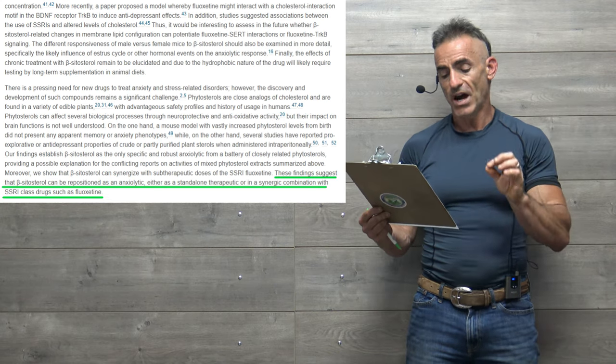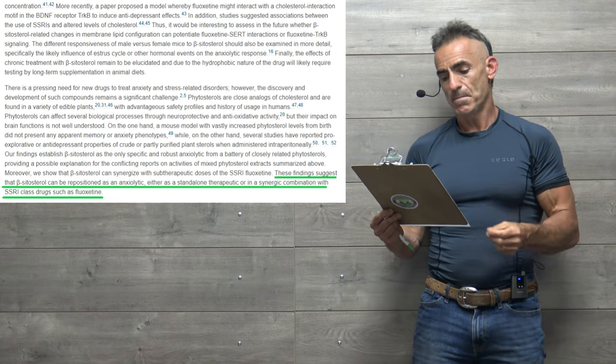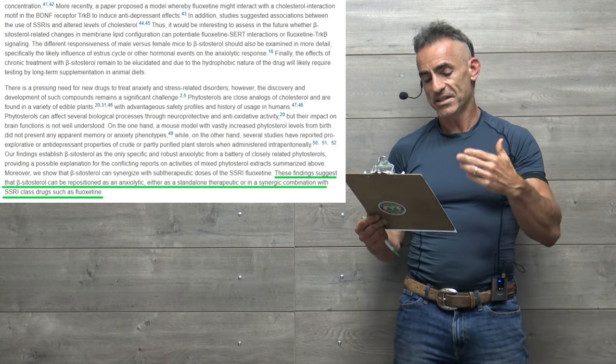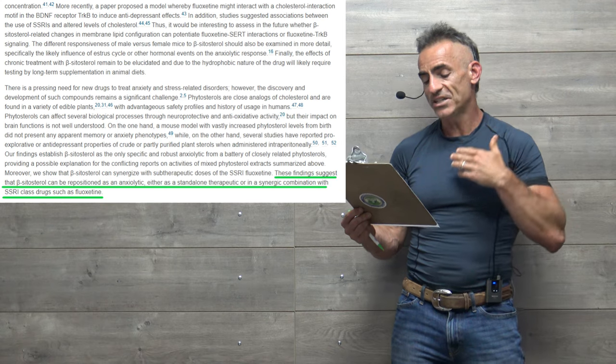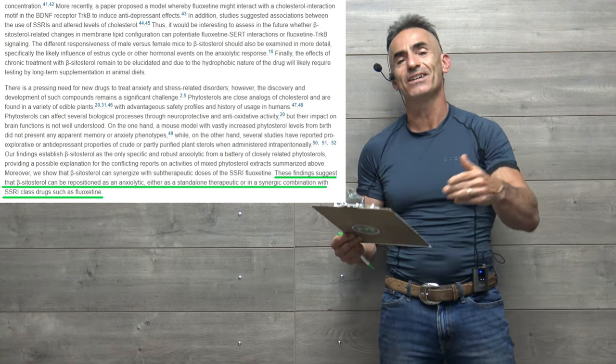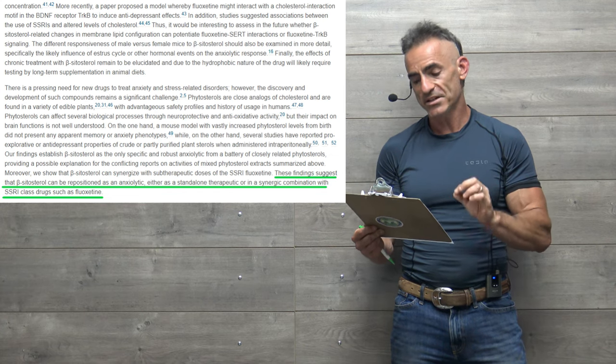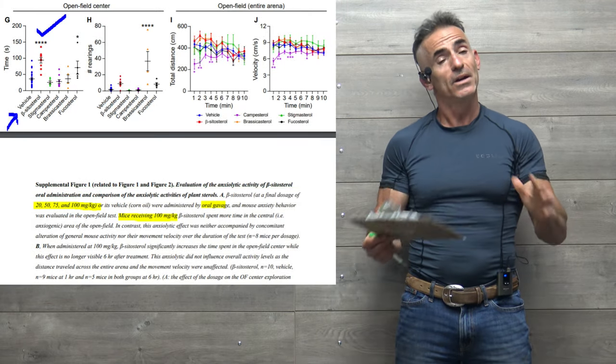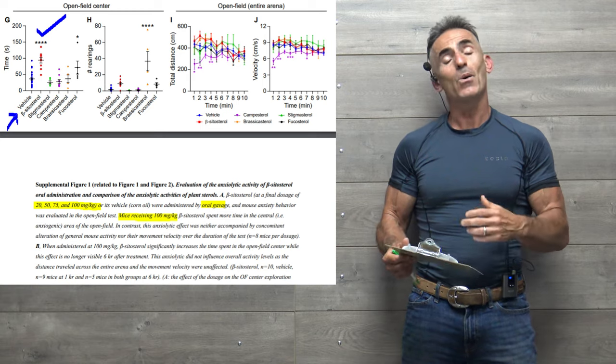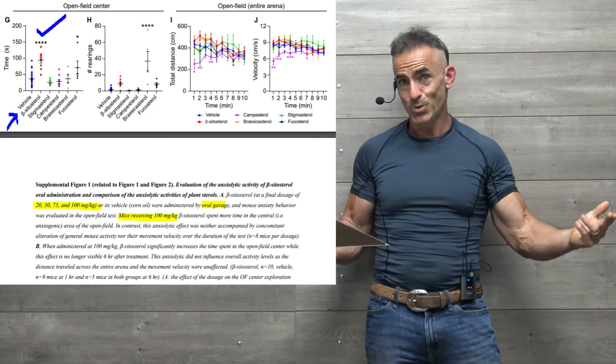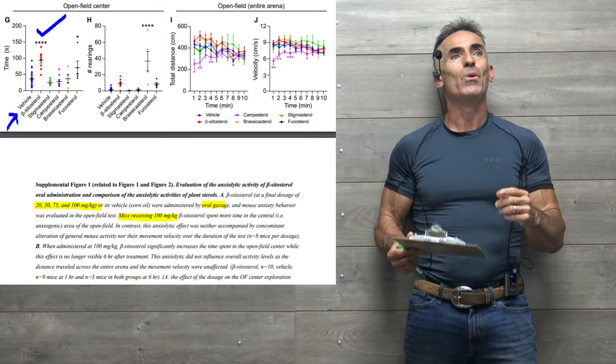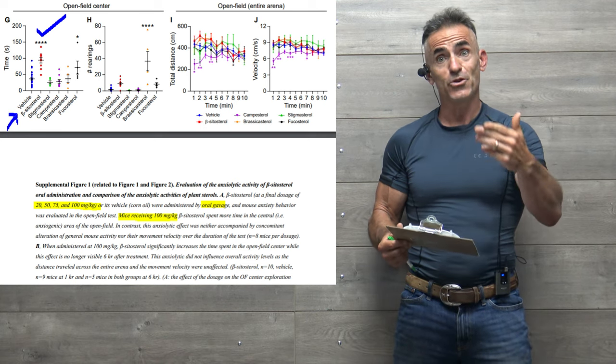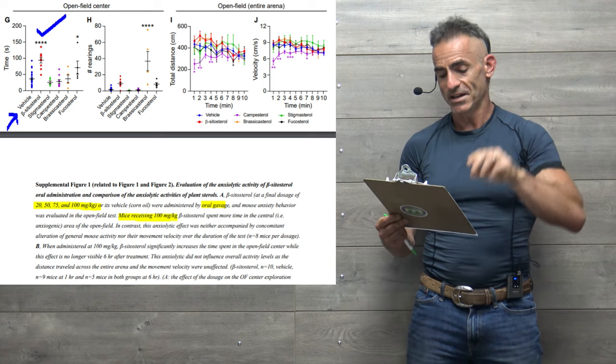These findings suggest that beta-sitosterol can be repositioned as an anxiolytic, either as a standalone anti-anxiety medication or in synergistic combination with SSRI class drugs such as fluoxetine. Remember, we need human trials to confirm exactly how that works. An animal model is wonderful and it's great, but obviously the biology is different. However, the researchers don't anticipate it operating any differently in the animal model to the human model. But guessing and studying are two different things.